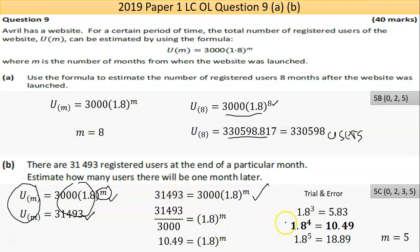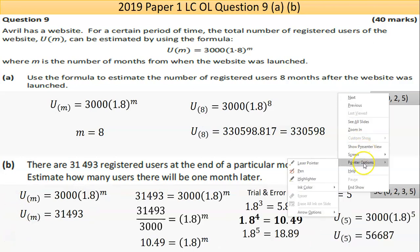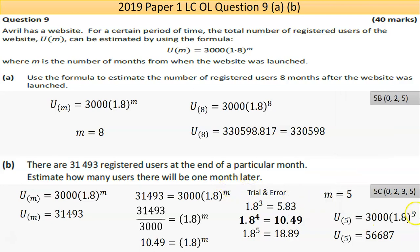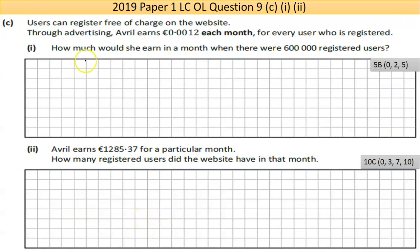I then try different values of M to find which month gives 10.49. Starting with 3 gives one value, starting with 4 gives 10.49. But re-reading the question - 'estimate how many users there will be one month later' - I need to find the number of users, not just the month. So by trial and error, that works out to month four; one month later is month five, giving 56,687 users. Apologies for that detour.